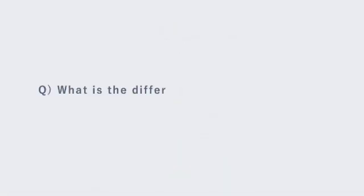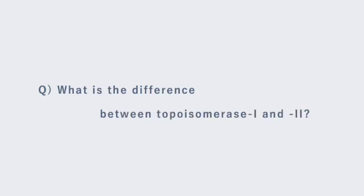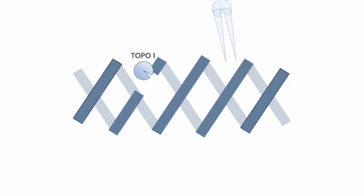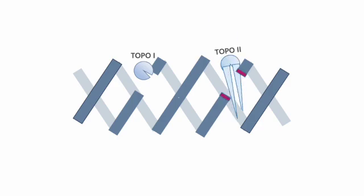What is the difference between topoisomerase 1 and 2? All cells have two major forms of topoisomerases. Type 1 makes single-stranded cuts in DNA, and type 2 enzymes cut and pass double-stranded DNA.